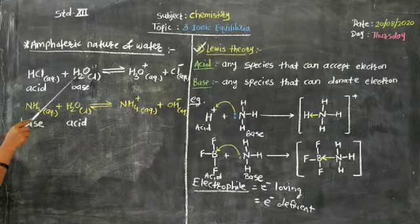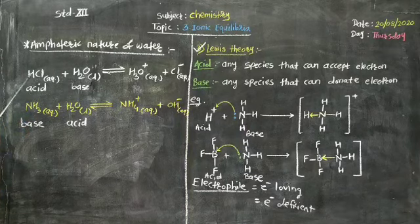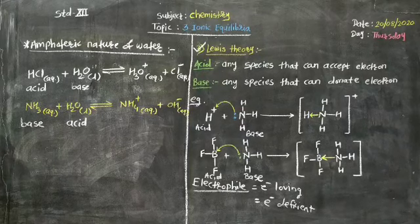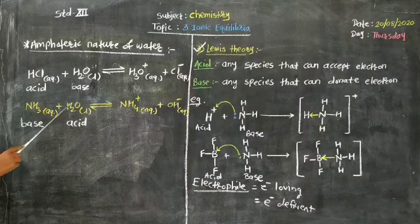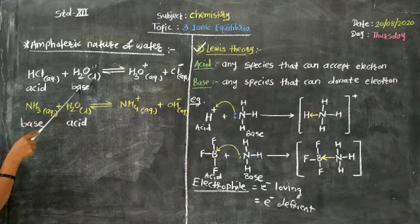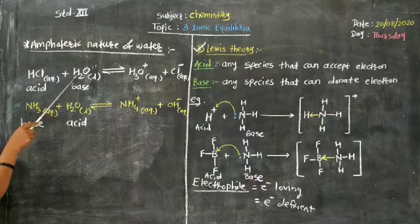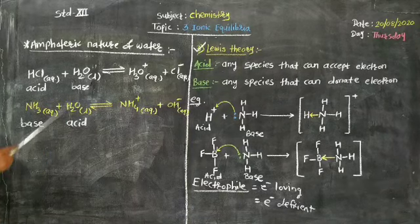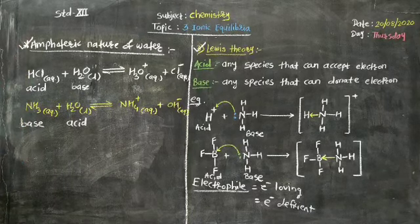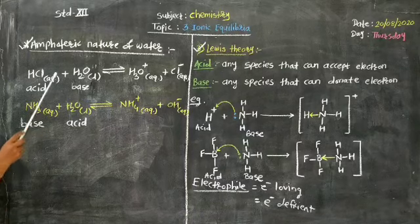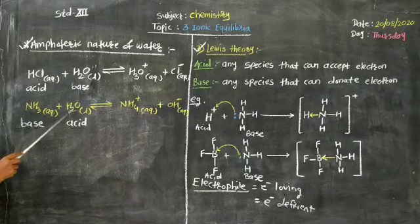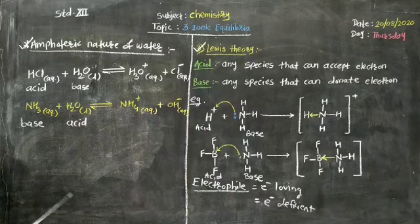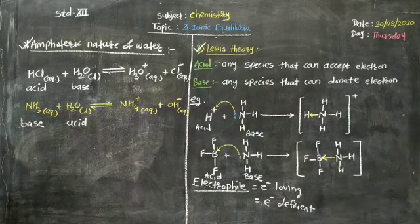In the first reaction, when water reacts with a strong acid, it behaves like a base. In the second reaction, when water reacts with a strong base, it behaves like an acid. This means water has the tendency to act as both an acid and a base. This nature of water — where it can show properties of both acid and base depending on what it reacts with — is known as the amphoteric nature of water.